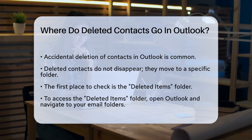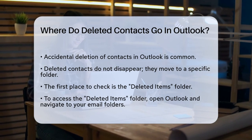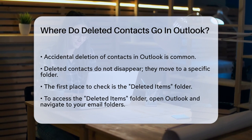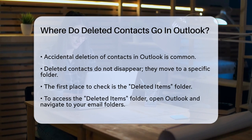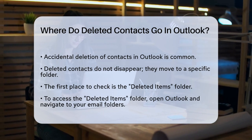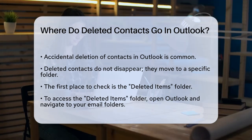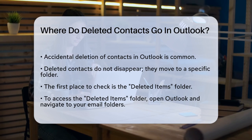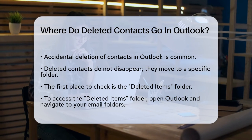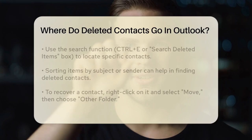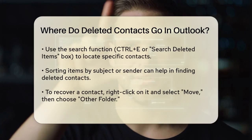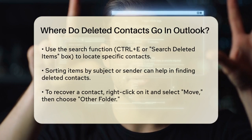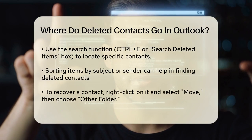The first place to look is the Deleted Items folder. To find this folder, open your Outlook and go to the list of your email folders. You'll see a folder named Deleted Items. Click on this folder to see all the items, including contacts, that you've recently deleted.